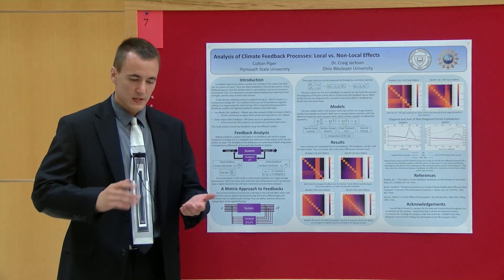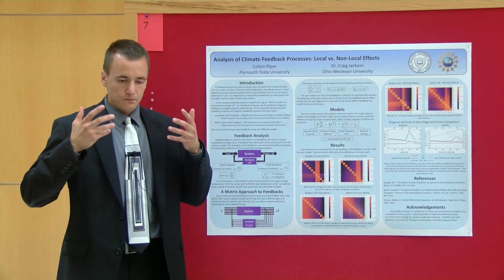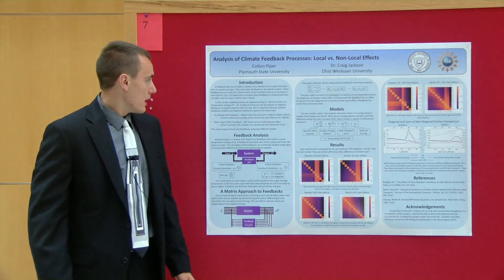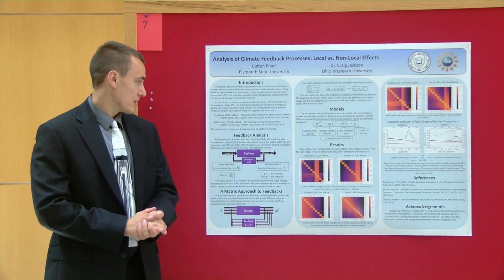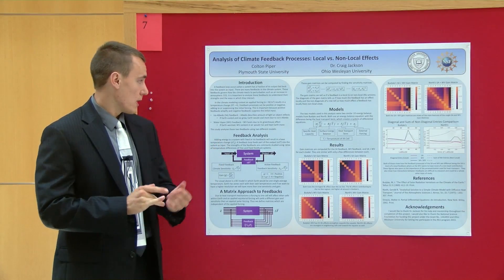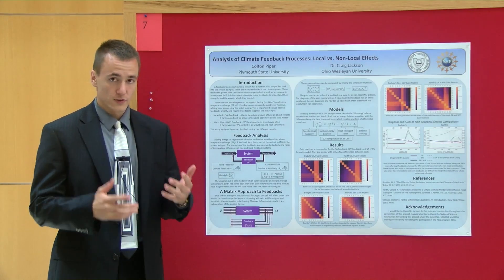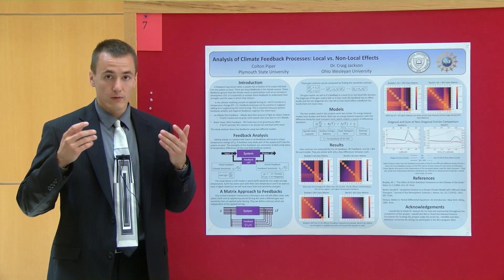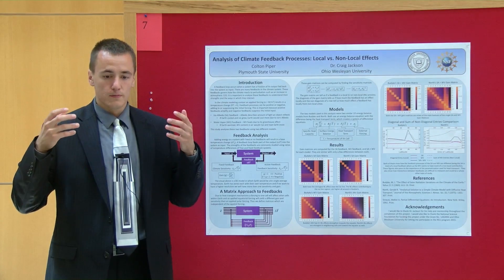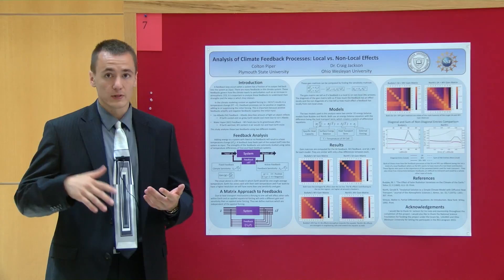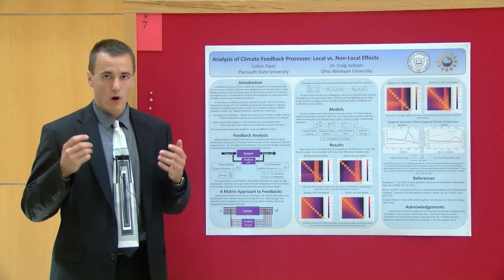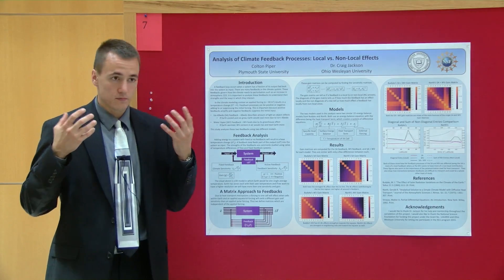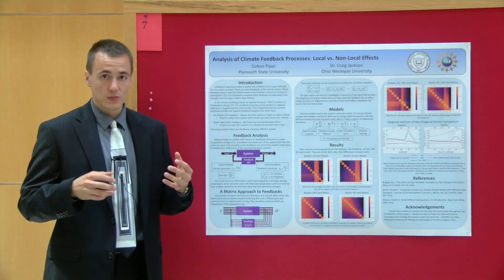This is important because it can determine whether the climate gets shot to high temperatures or low temperatures, or finds a nice stable equilibrium like we're at right now. The two feedbacks we studied in this analysis are the ice albedo feedback, where albedo describes the amount of light an object reflects. If earth is cooled or heated, it would melt a lot of the ice, lowering the albedo, causing earth to absorb even more heat and raise the temperature even more, melting more ice. There's also a water vapor feedback in which water vapor is a greenhouse gas and keeps heat inside, so heating the earth a little bit would increase the temperature even more, producing even more water vapor in the air.